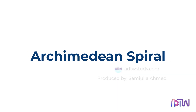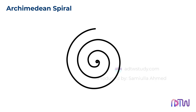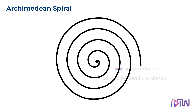What is an Archimedean spiral? A spiral is a curve that moves outward from a central point while maintaining a constant separation between its turns. The Archimedean spiral is a type of spiral in which the distance between successive turns remains constant. This curve is commonly used in mechanical engineering, gear design, and CAM profiles, making it an essential part of engineering drawing.